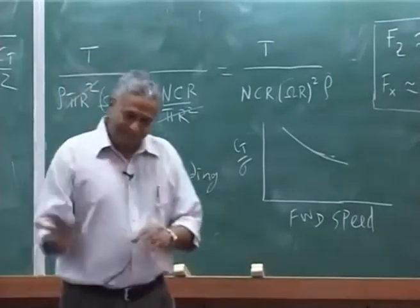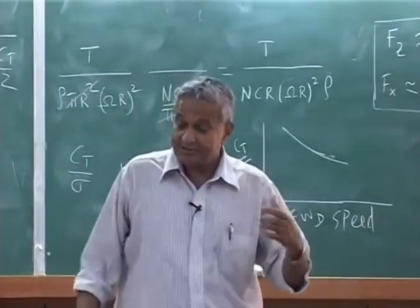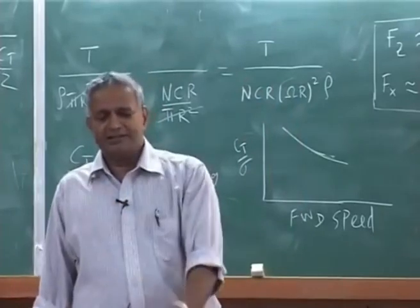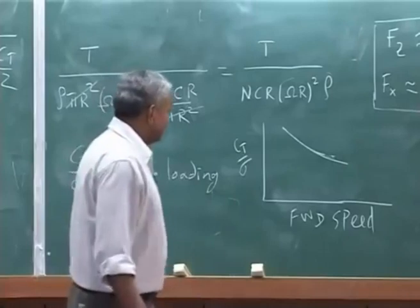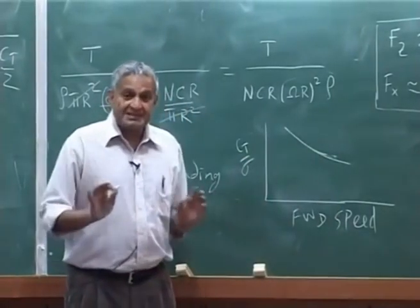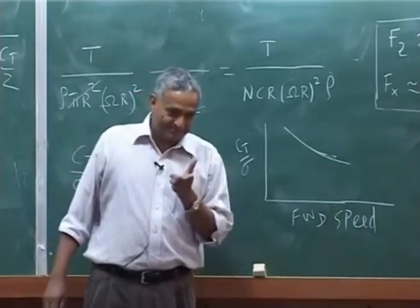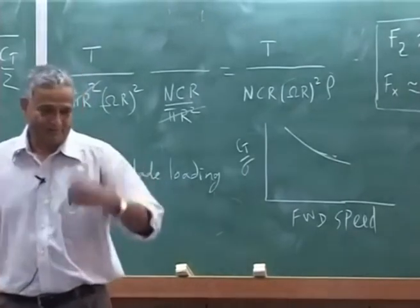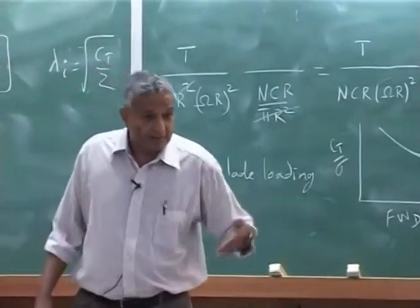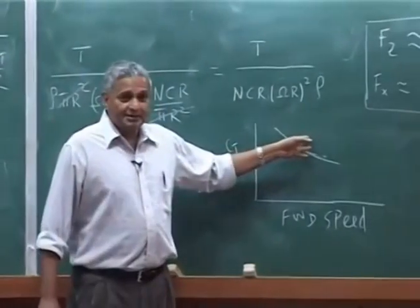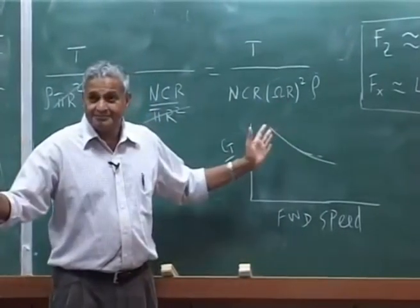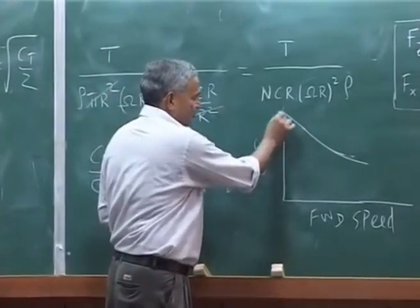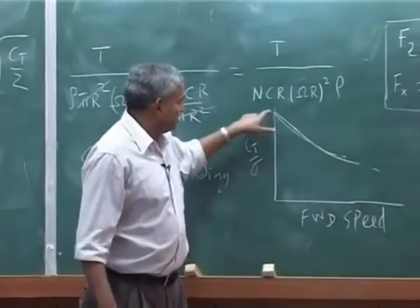But how do you generate this curve theoretically? Now we are going to do it, but we will give, because this requires a very detailed if you want to actually helicopter thing. But in a preliminary thing we can do simplistically. So this is just for you to know, CT by sigma is also used for drawing a limit of a rotor, stall limit you may say. Because beyond which if you go, blade will stall.